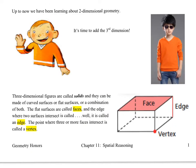Up to now we've been learning about two-dimensional geometry, which is perfectly flat, just like Stanley, and now it's time to add that third dimension, just like in our real world. Three-dimensional figures are called solids and they can be made of curved surfaces or flat surfaces or a combination of both.